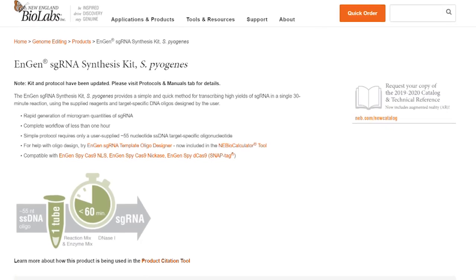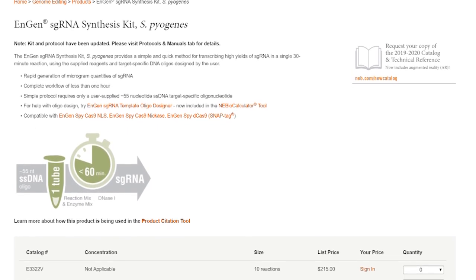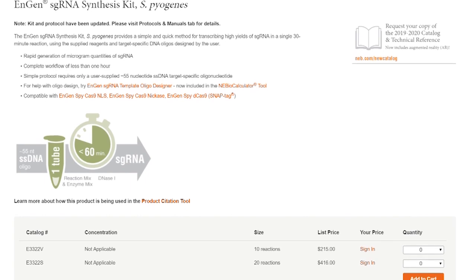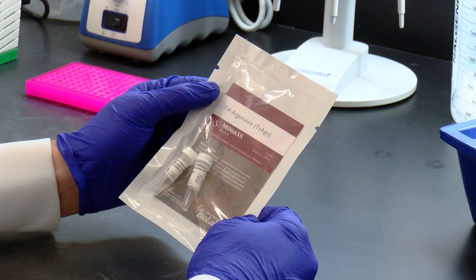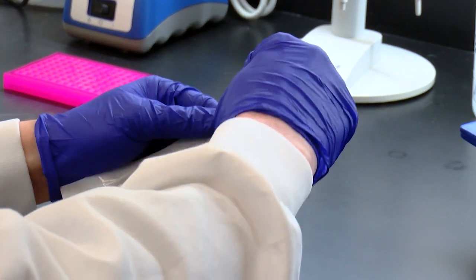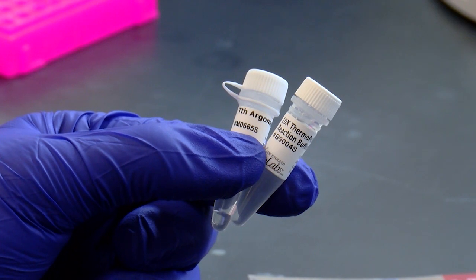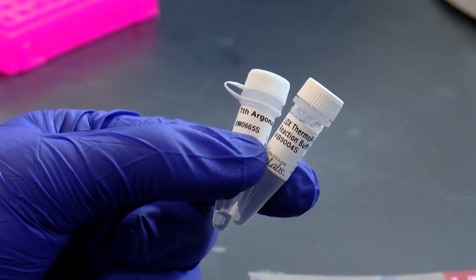So for the guide portion of it, we sell a sgRNA kit to simplify the synthesis process of a Cas9 guide. It's even easier with an Argonaut. They just use short DNA or RNA guides. In the case of Thermus thermophilus Argonaut, which we just launched, it's a short DNA guide, so you could order them from your favorite vendor and just add a phosphate to it, and you have a guide that's ready to use.